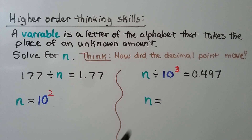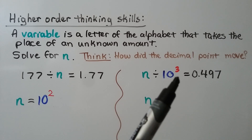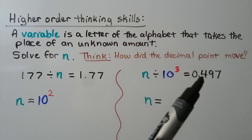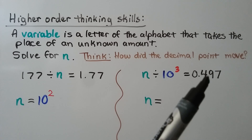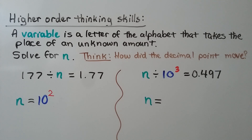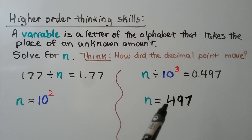Here we have n divided by 10 to the third power equals 497 thousandths. We need to find the value of n. Since the exponent 3 means the decimal point was moved three places left, it must have been originally three places to the right — so n equals 497. The decimal point was originally after the 7; dividing by 10 to the third power moved it three hops to the left to give 497 thousandths.